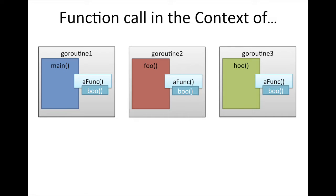Well, again, boo is in the context of goroutine1 if when boo is called, it's called by aFunc, and when aFunc was called, it was called by main, which was in the goroutine of 1. Does that make sense?